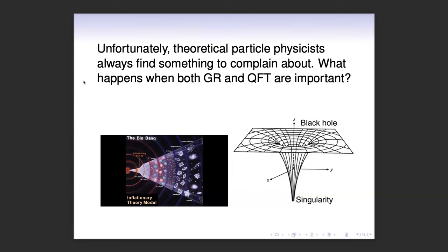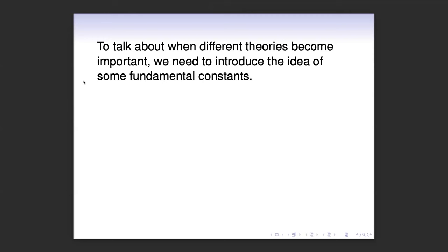Theoretical particle physicists are not in our nature to be happy, really. So we're always finding something to complain about. In particular: what about when both GR and quantum field theory should be important? Sure, it doesn't happen very often — you might have to go inside a black hole or back to the beginning of the universe or something. But in principle it can happen. What happens then? I need to know.